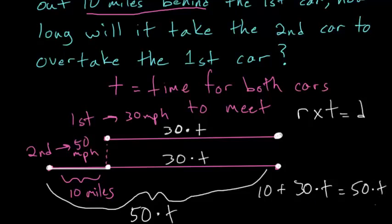So now if we solve this equation for t, we can figure out how many hours it takes for both cars to meet. If we subtract 30t from each side, we're left with 10 is equal to 20 times t. And then dividing each side by 20, we're left with t is equal to 10 over 20, or one half.